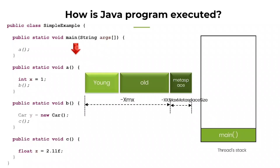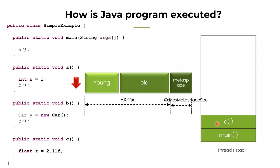From here, the thread goes on to invoke method A. When it comes to method A, method A is added to the stack frame. Now, method A is creating a primitive integer variable x whose value is 1. Where is x equal to 1 going to be stored — in young generation, old generation, or where? Since x is a local variable and also a primitive data type, it is not stored in young or old generation. Rather, it is stored within the thread stack itself.